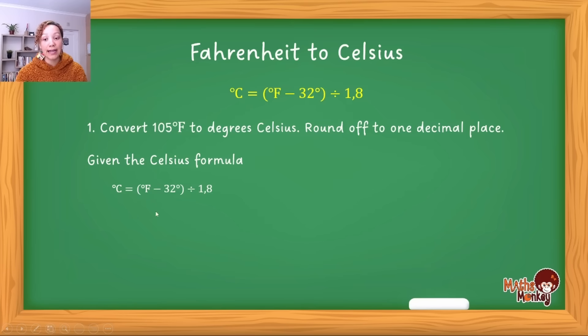Wherever you see Fahrenheit in the formula is where you add the 105. On your calculator, make sure you include the brackets. You'll type this as you see it and end up with 40.555. The question says round off to one decimal place, so we round to 40.6°C. So 105°F equals 40.6°C—these two temperatures are the same, just in different units. What's important is you don't have to add the degree sign during the calculation.